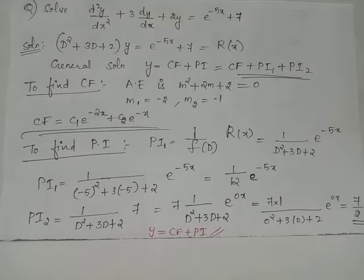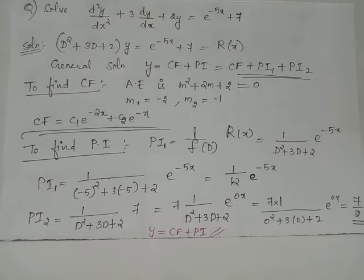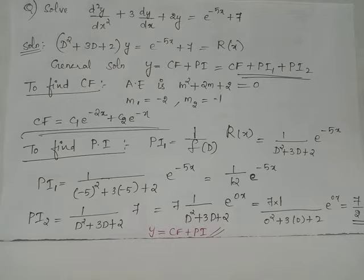You can consider 7 as 7·e^(0x). Whenever you have a constant term appearing in the RHS of a differential equation, consider it as constant times e^(0x). This is because we are familiar with evaluation of PI whenever RHS is of the format e^(ax), so you can compute PI for a constant when a = 0.